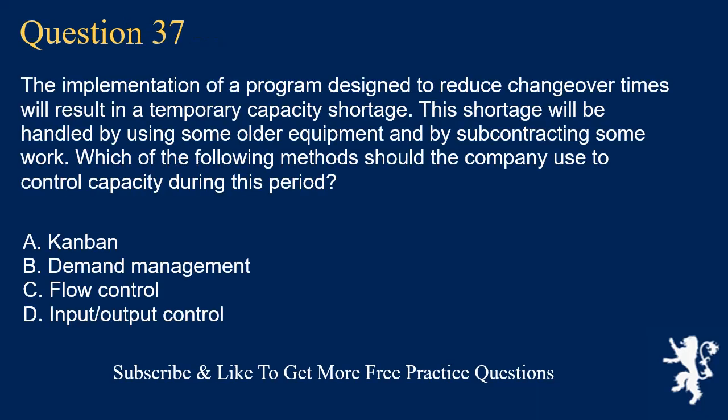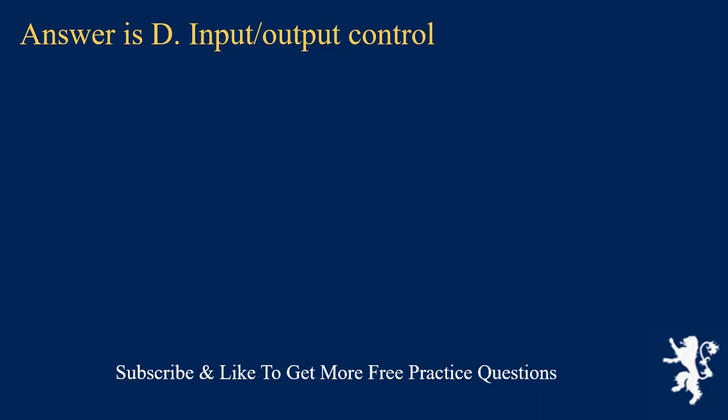Question 37. The implementation of a program designed to reduce changeover times will result in a temporary capacity shortage. This shortage will be handled by using some older equipment and by subcontracting some work. Which of the following methods should the company use to control capacity during this period? A. Kanban. B. Demand management. C. Flow control. D. Input/output control. Answer is D. Input/output control.